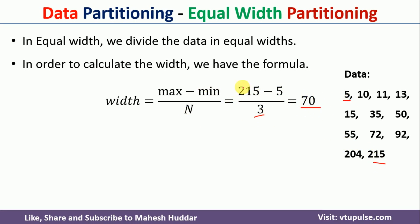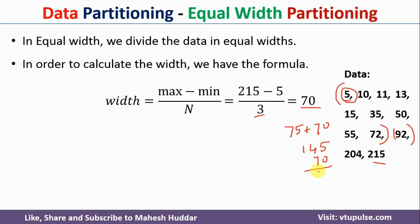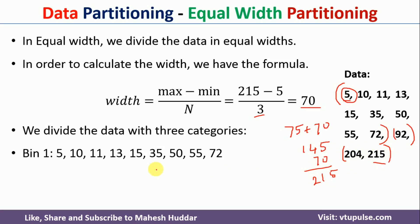We take the minimum value of 5 and add the width of 70: 5 plus 70 equals 75. So the first partition contains all data elements from 5 up to 75 — as shown, from 5 to 72 goes into the first group. Greater than 75, plus another width of 70, gives 145, so greater than 75 up to 145 forms the second partition, which contains only 92. Then 145 plus 70 gives 215, so values above 145 up to 215 go into the third partition, which contains the remaining two data points.